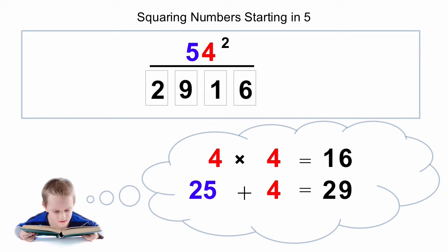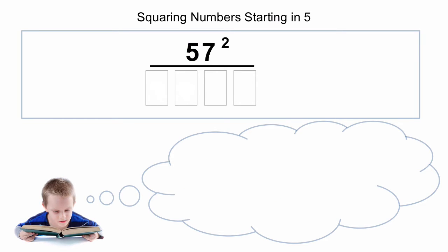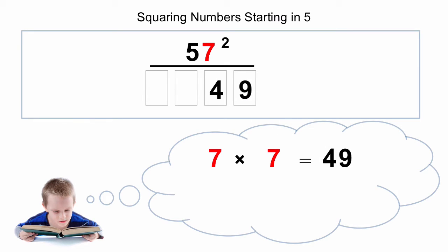Let's have a look at another example: 57 squared. The units digit is 7, so 7 times 7 is 49 — there's our last two digits. Now because the leading digit is 5, it's 25 plus the units digit: 25 plus 7 is 32, and there's our answer: 3,249.